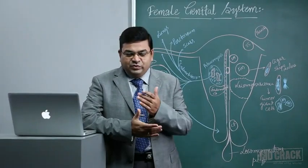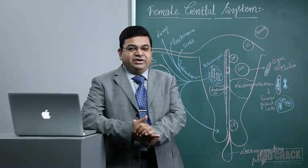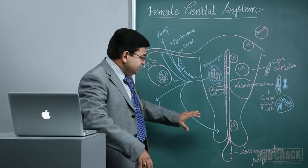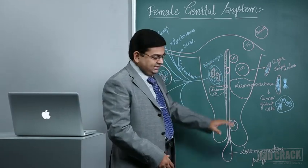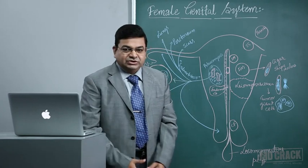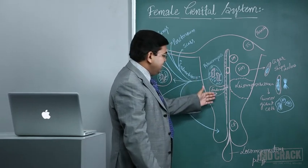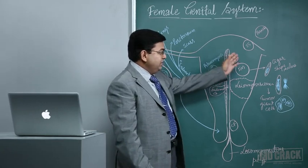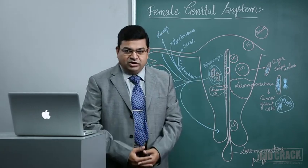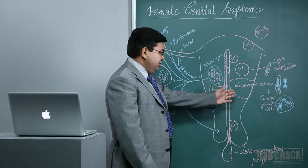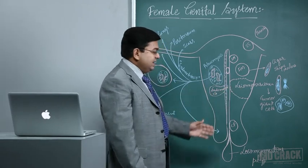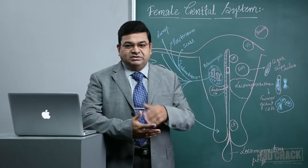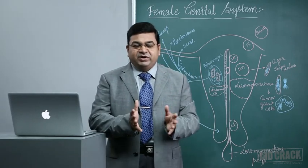Welcome. Today we cover a very interesting and important topic in the female genital system: disorders of the uterine body, the uterine corpus. There are many conditions including benign conditions like adenomyosis and endometriosis, leiomyomas, and malignant conditions like leiomyosarcomas and endometrial carcinomas. This is a vast subject and we will try to condense it in this video presentation.